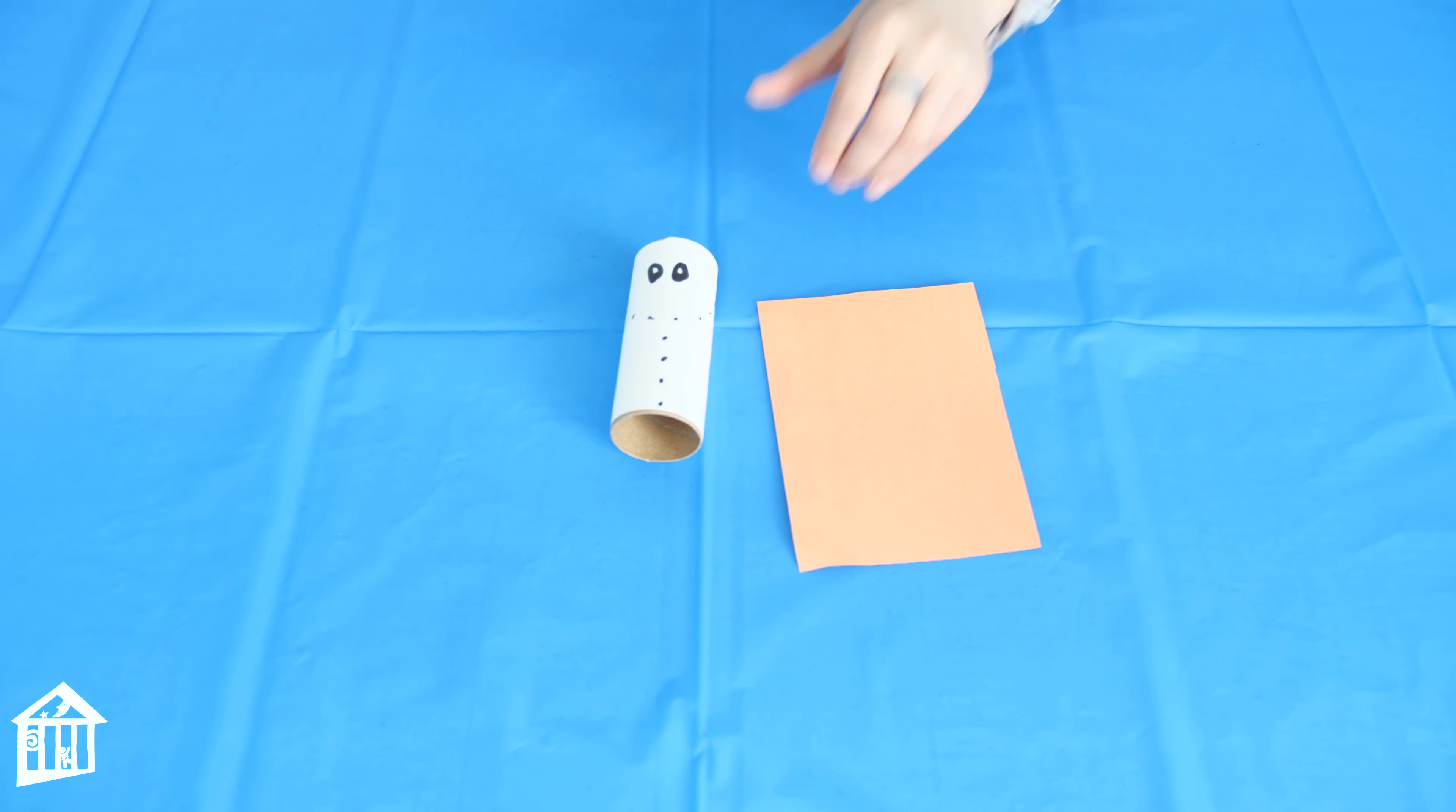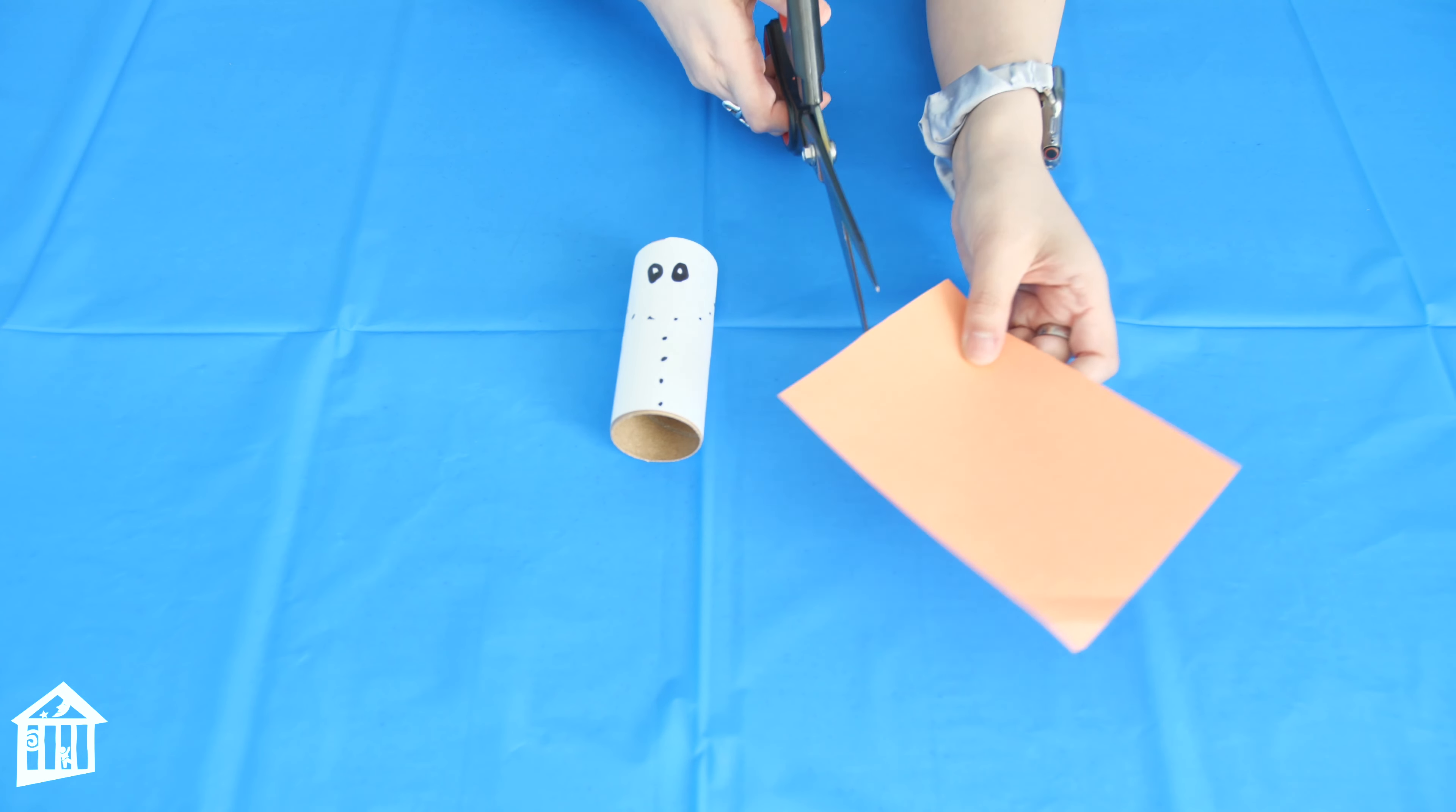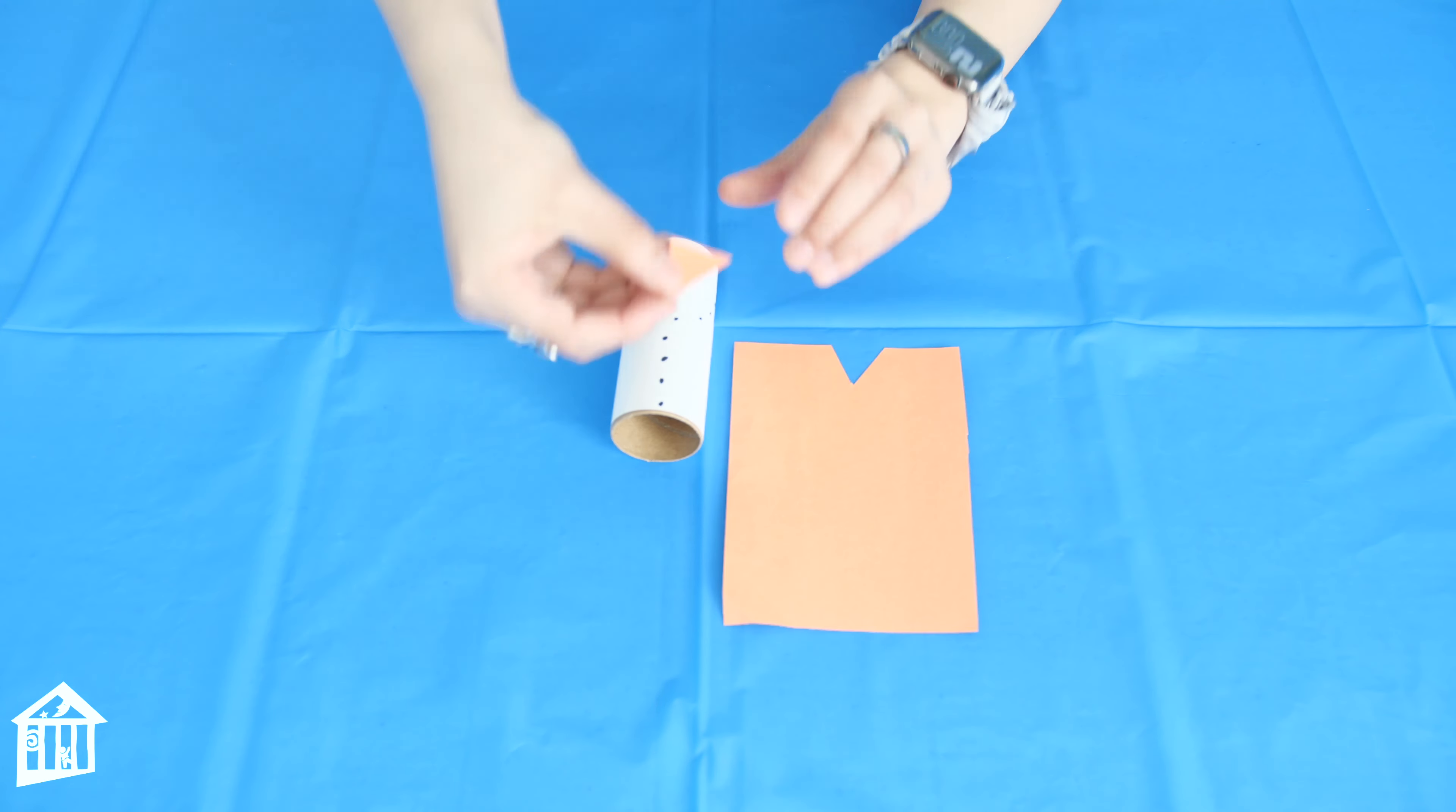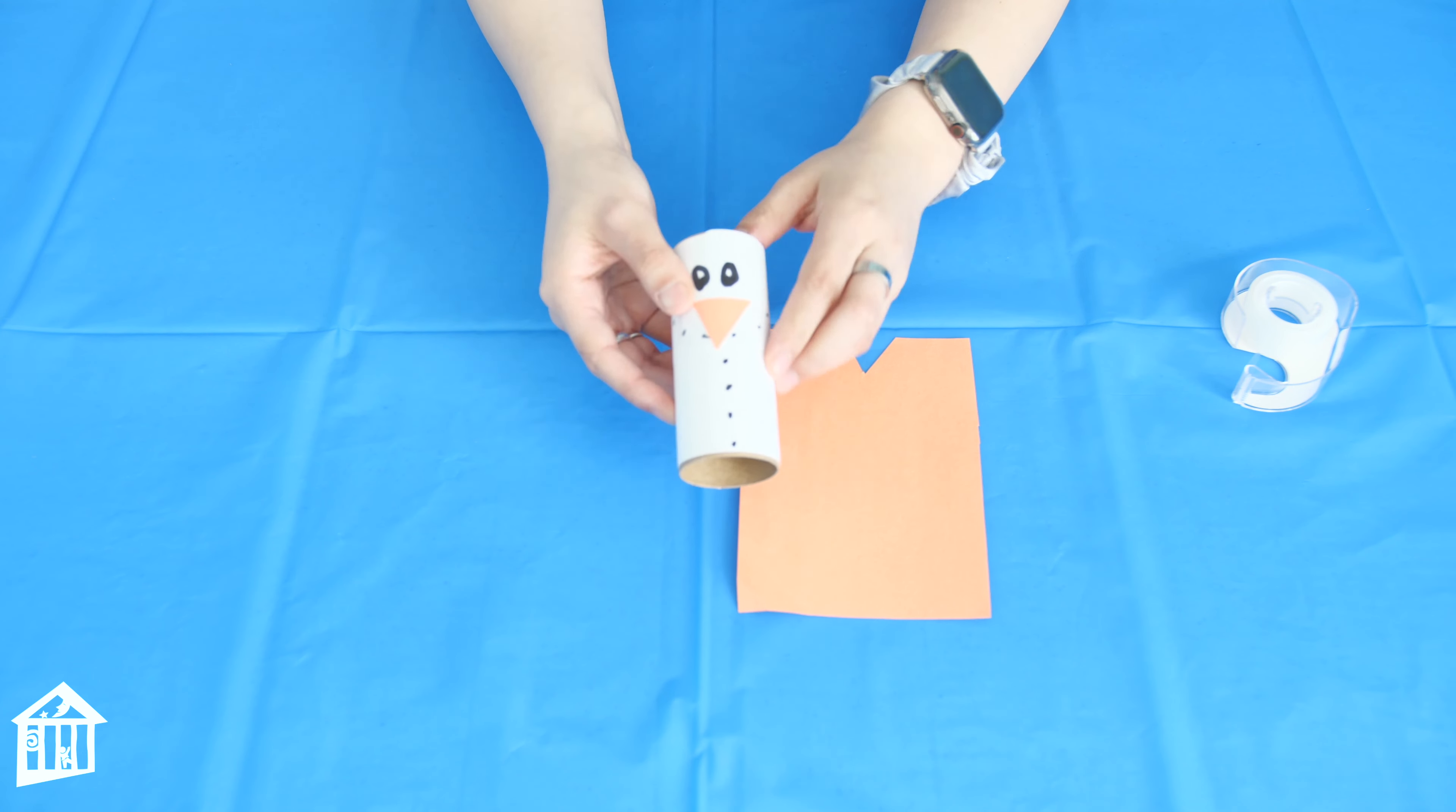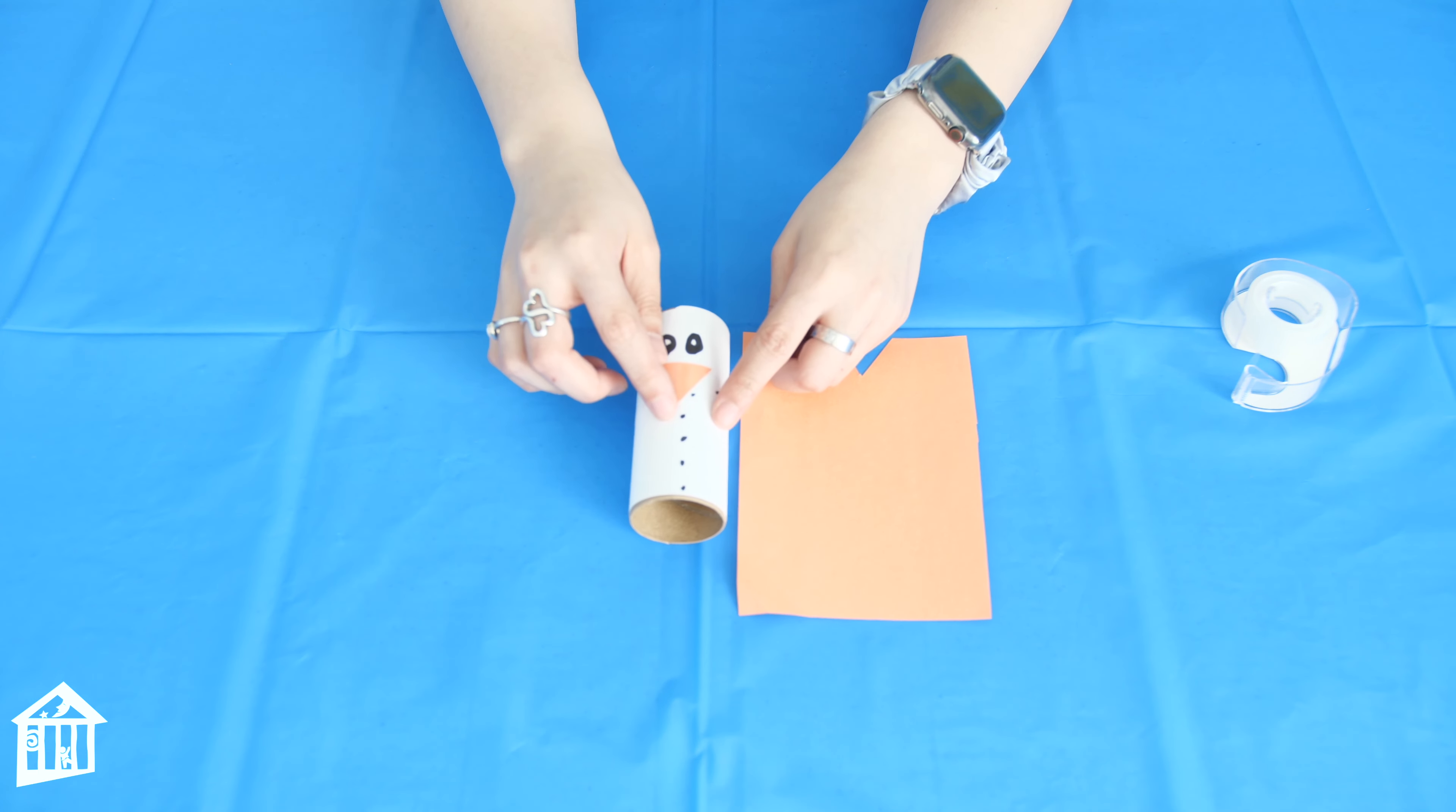Next you're gonna grab your orange piece of construction paper to make the nose. What you do is just cut a triangle just like that. We're gonna tape it right here.